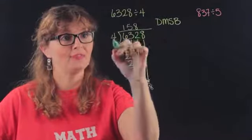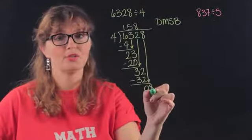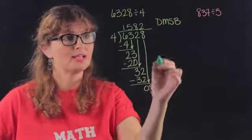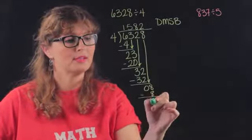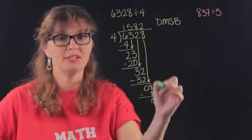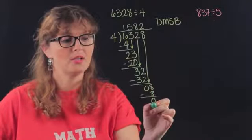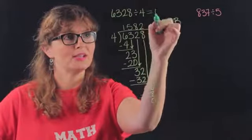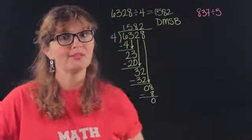Divide, four goes into eight twice. Multiply, two times four is eight. Subtract, zero. Anything to bring down? Nothing to bring down, any remainder? Nope, we're done. So we can say this is fifteen eighty-two.